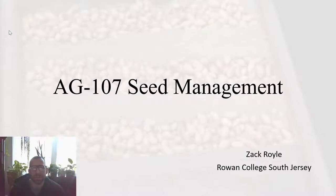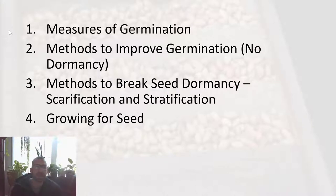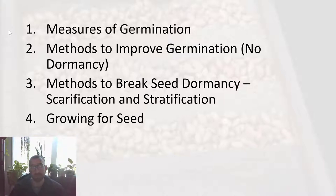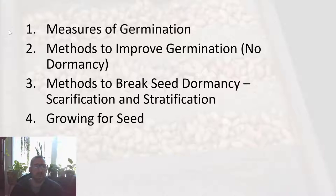Hey guys, so in this lecture we are going to be looking at seed management. There are four topics that we are going to cover. We're going to start by looking at measures of germination, then methods to improve germination — that's when our seeds are no longer dormant, if they have a dormancy condition. We'll then talk about methods to break seed dormancy: scarification and stratification. And then we will talk about growing plants for seed as opposed to growing them for fruit.